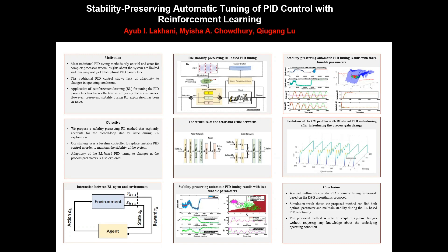Application of reinforcement learning for the tuning of PID parameters has been effective in mitigating the above issues. However, preserving stability during reinforcement learning exploration has been an issue. The main contribution of this work was to develop a stability-preserving automatic PID-tuning approach based on reinforcement learning, particularly the DPG algorithm, which is a deterministic policy gradient algorithm. Our strategy uses a baseline controller to replace unstable PID control in order to maintain system stability, and the adaptivity of the RL PID-tuning to changes in the process parameter is also explored.